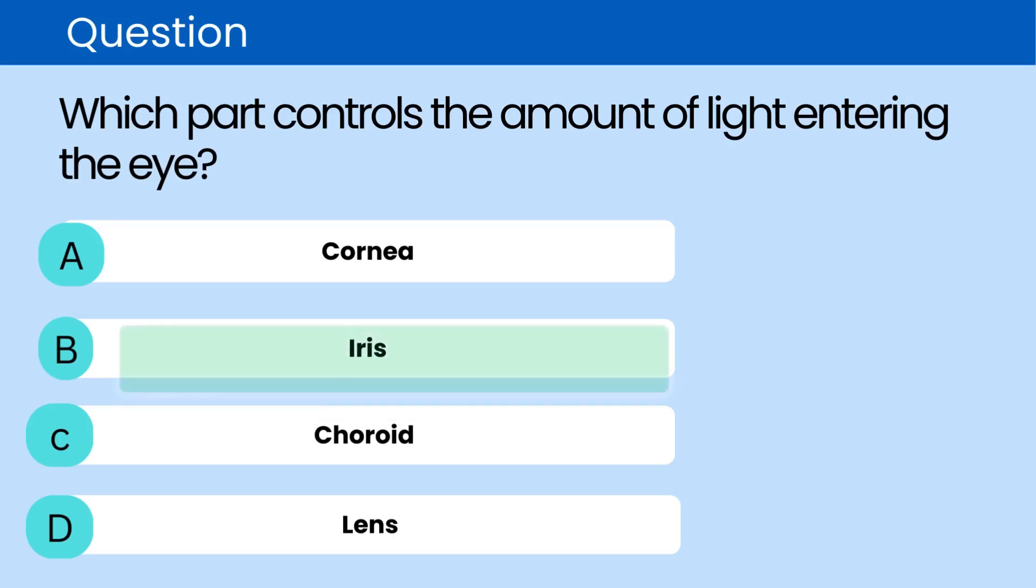The correct answer is B. Iris. The iris is the colored part of the eye that controls the size of the pupil, thereby regulating the amount of light that enters the eye.